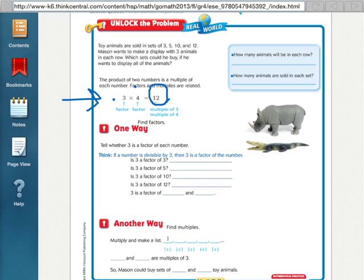So, if our product is 12, then that means that 12 is a multiple of 3: 3, 6, 9, 12, and it's also a multiple of 4: 4, 8, 12.